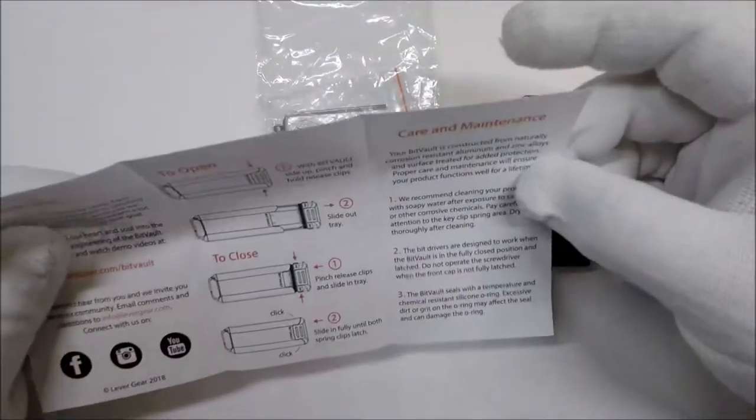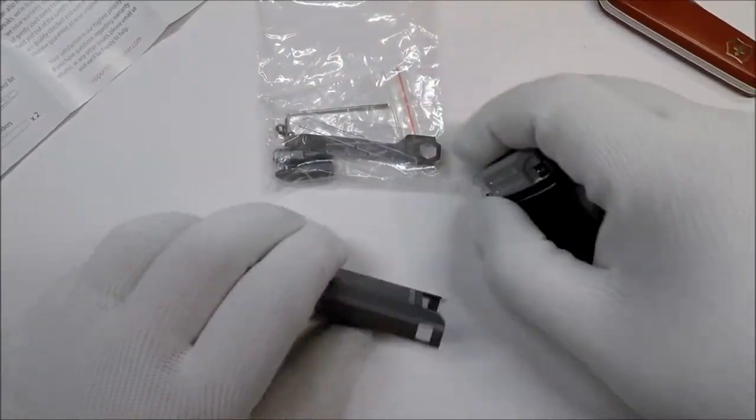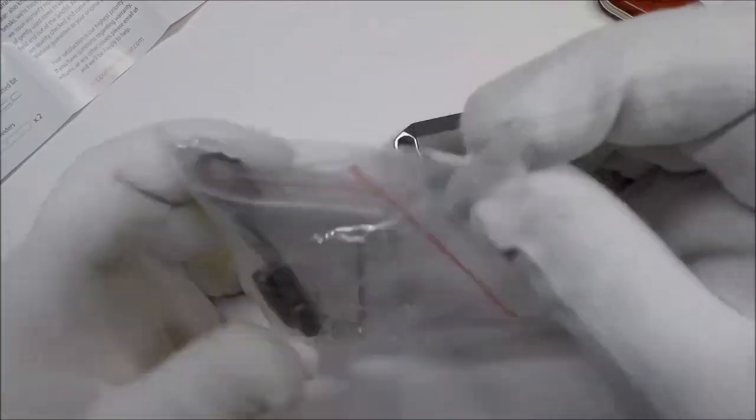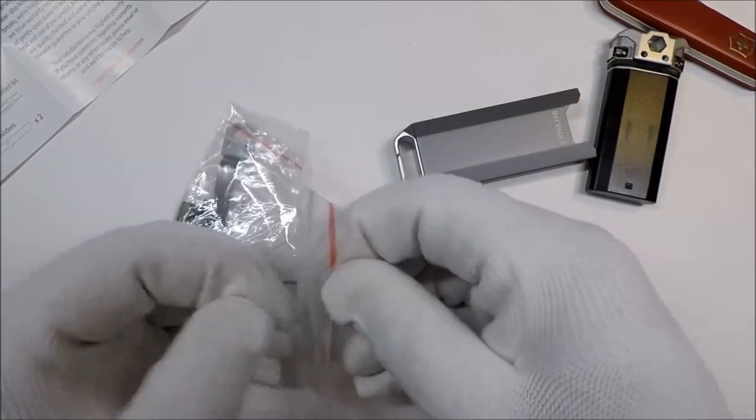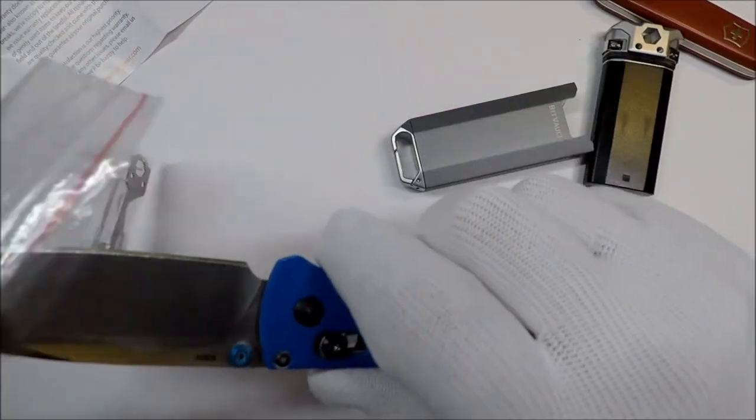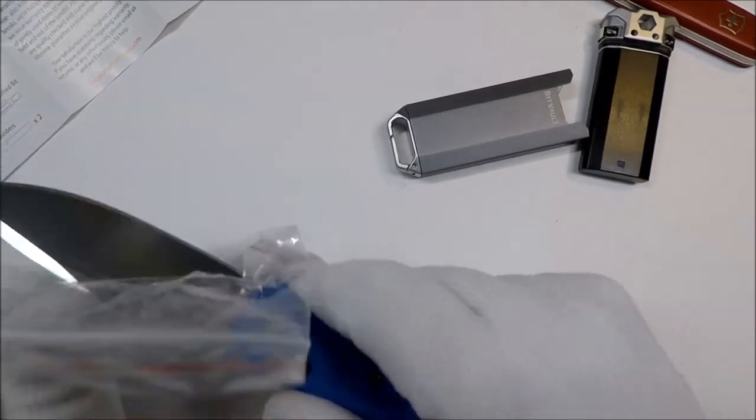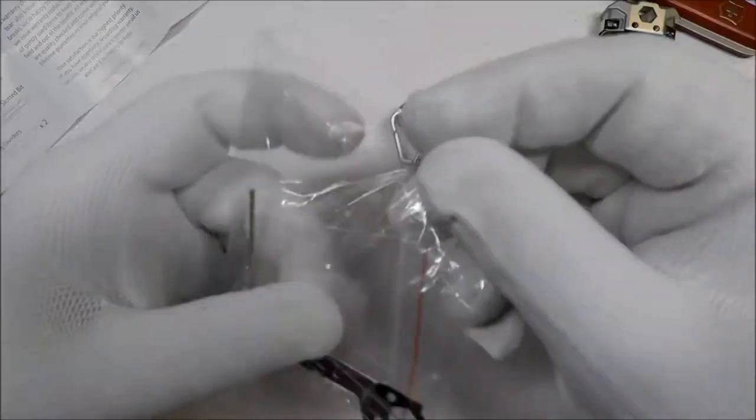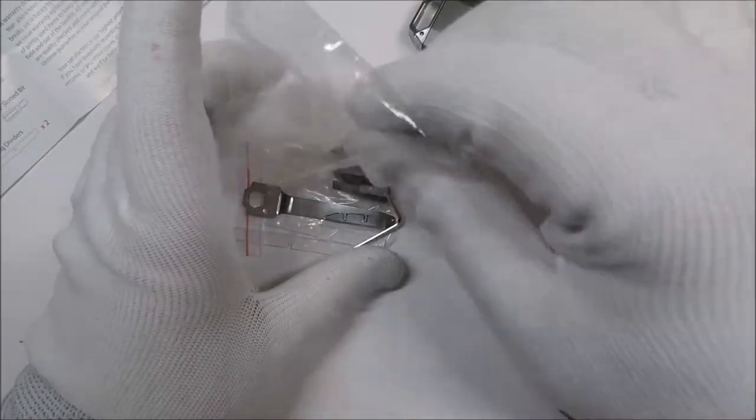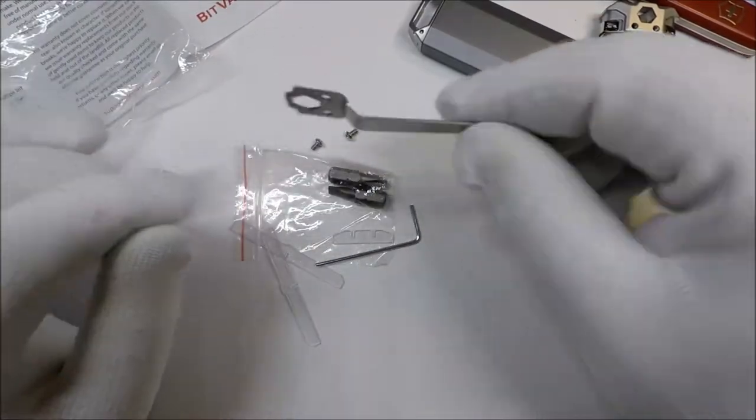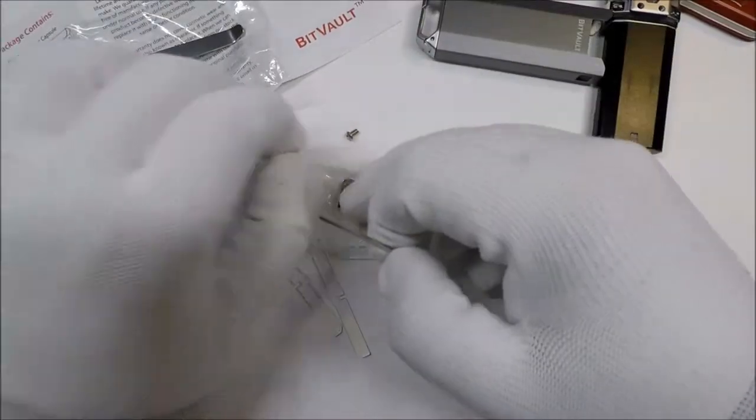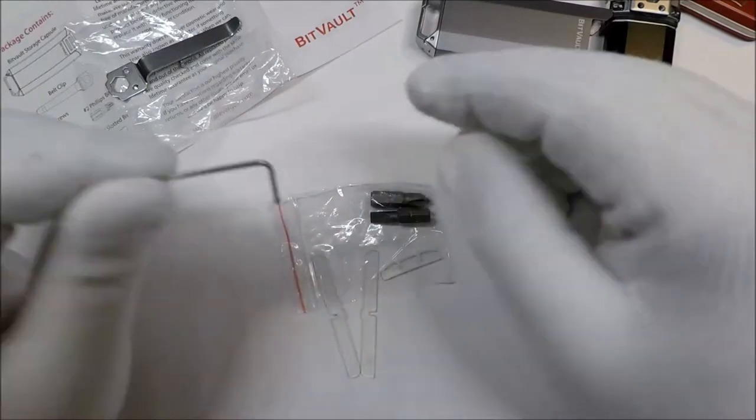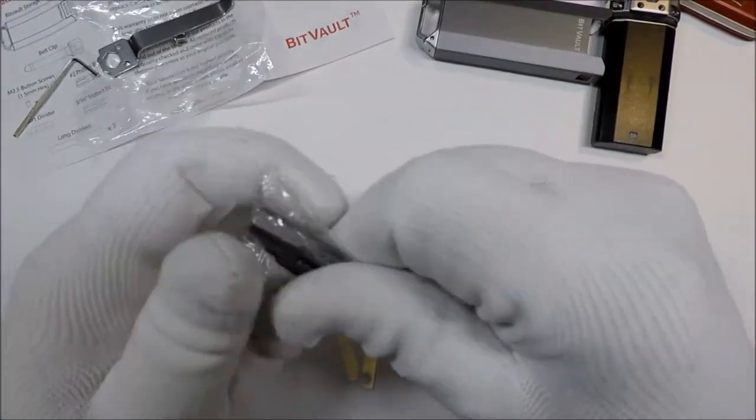So it comes with two bit drivers. Let's see what all this thing comes with. It comes with an Allen wrench - wait, that's not an Allen wrench, this is an Allen wrench. The belt clip, screws for the belt clip, which I'm pretty sure I don't really use. The Allen wrench, the two bits.